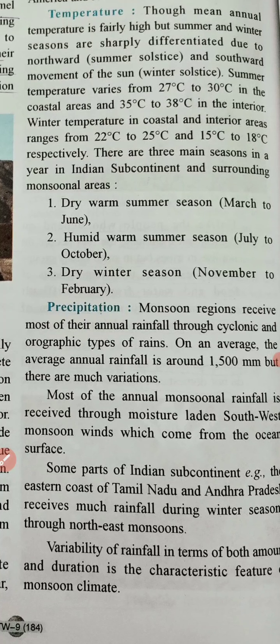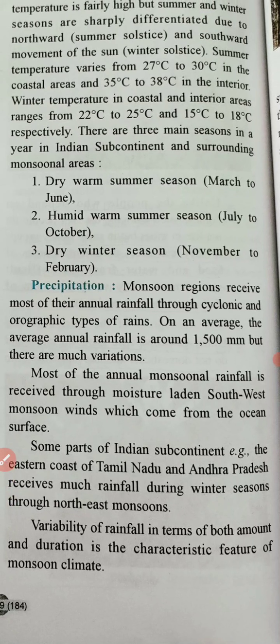There is great regional variation in rainfall. Areas like Meghalaya — Mawsynram and Cherrapunji — receive extremely high rainfall. But some areas like Rajasthan receive very little, around 25 cm. Most of the annual monsoon rainfall is received through moisture-laden southwest monsoon winds, which come from the Indian Ocean surface towards the land.